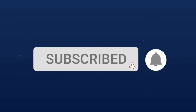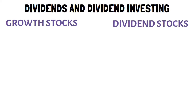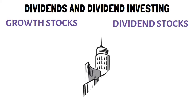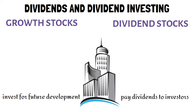There are two types of stocks: growth stocks and dividend stocks. A company has two options to use its profits - one is to invest in future development and growth, or instead, give dividends directly to investors, which will be credited directly to them.